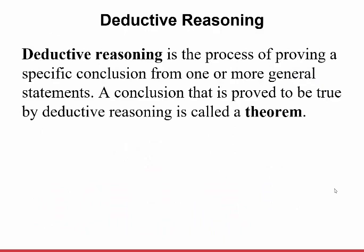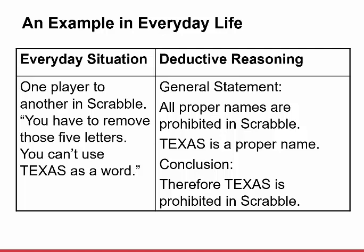Now let's talk about deductive reasoning — a somewhat stronger argument. Deductive reasoning is the process of proving a specific conclusion from one or more general statements. A conclusion proved true by deductive reasoning is called a theorem. For example, in a Scrabble game: general statement — all proper names are prohibited in Scrabble; Texas is a proper name; therefore, Texas is prohibited in Scrabble. You're taking general statements and arriving at a specific proven conclusion.